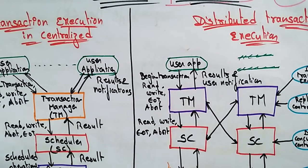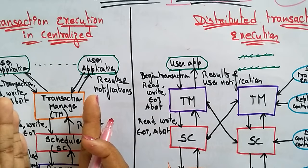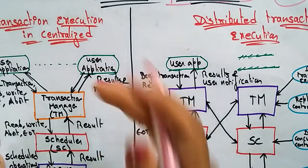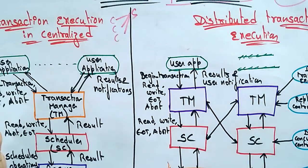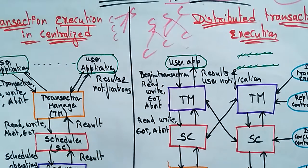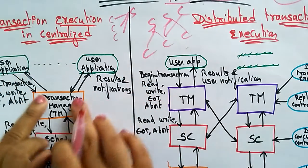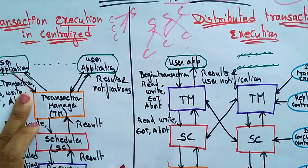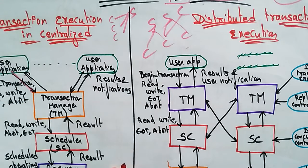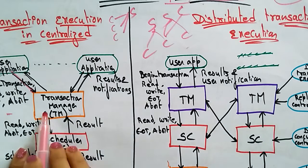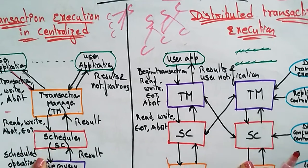In a centralized system, there is only a single system — one server and multiple clients. In the distributed environment, you have many servers and many clients. In the centralized execution, user applications first enter into the transaction manager, sending messages like begin transaction, read, write, and end of transaction. The transaction manager then sends read, write, and end-of-transaction messages to the scheduler.